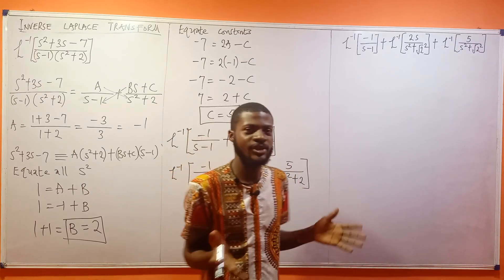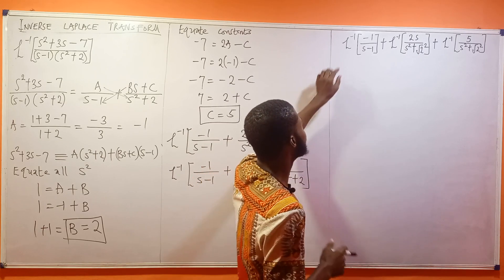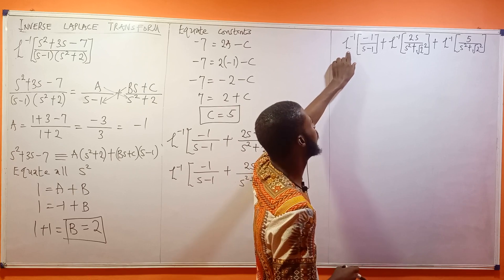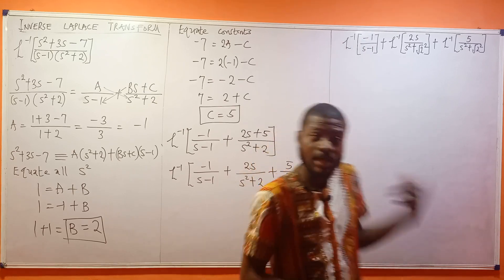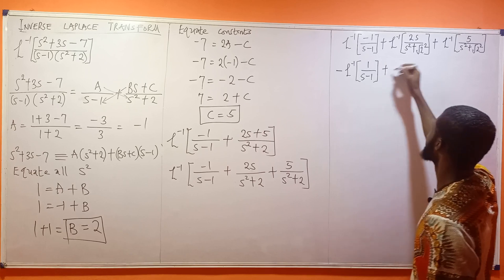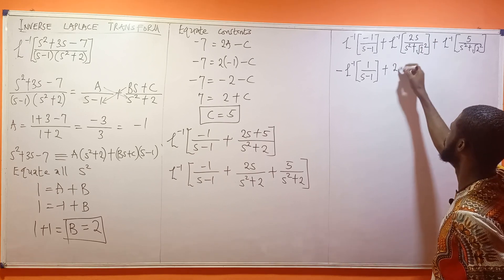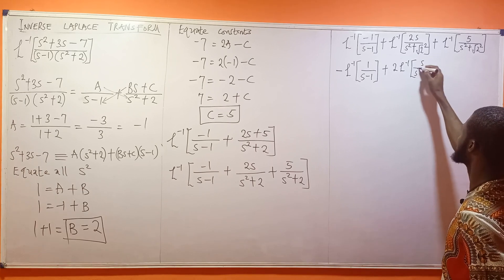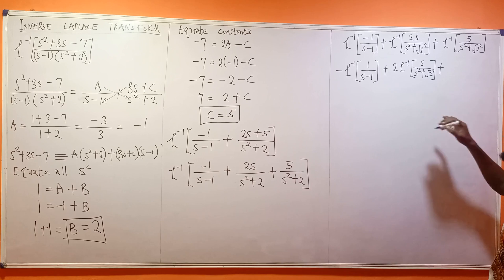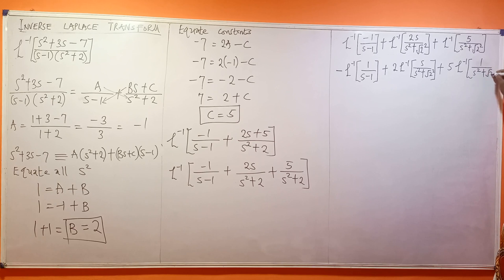The expression may look complicated but it's not difficult. I can pull constants outside: this becomes -1 times inverse Laplace of 1/(s - 1), plus 2 times inverse Laplace of s/(s² + (√2)²), plus 5 times inverse Laplace of 1/(s² + (√2)²).